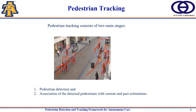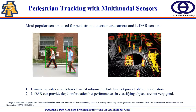Let's start with the definition of pedestrian tracking. Pedestrian tracking consists of two main stages: the first is pedestrian detection, which involves classifying and localizing pedestrians in an image frame, and the second is the association of the detected pedestrians with current and past estimates.